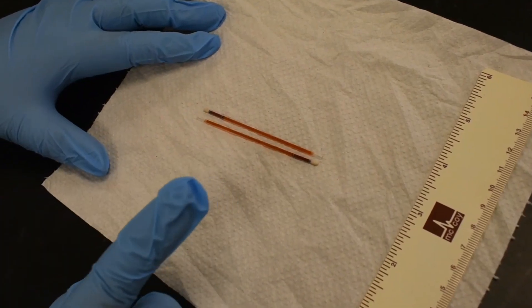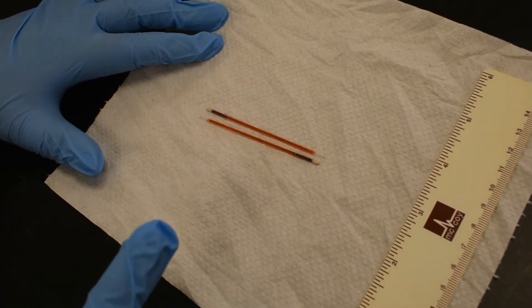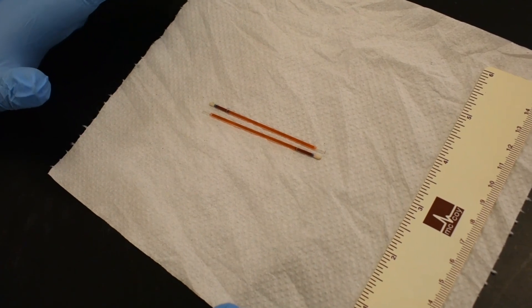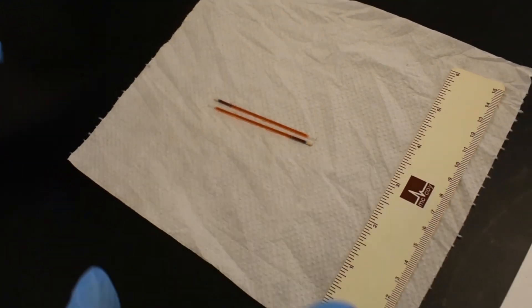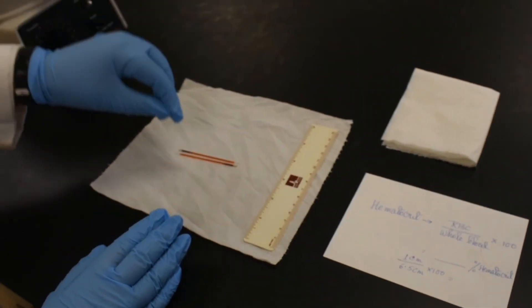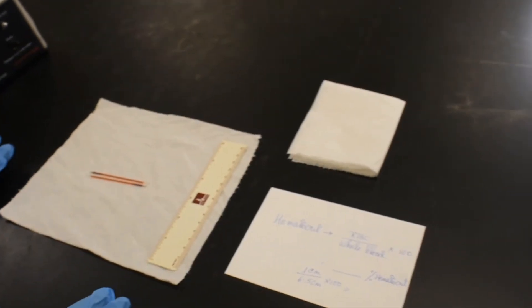Once you are done with your calculation with the sample, always go back and compare the value with the normal male versus female. And after you are done, do not forget to clean up. Throw away the samples with blood in the biohazard container and also clean up the area where you have worked.